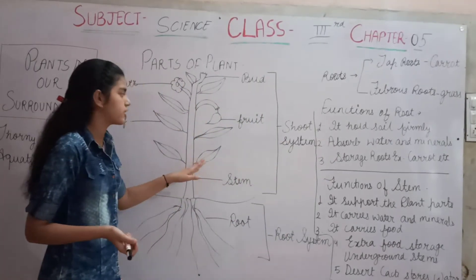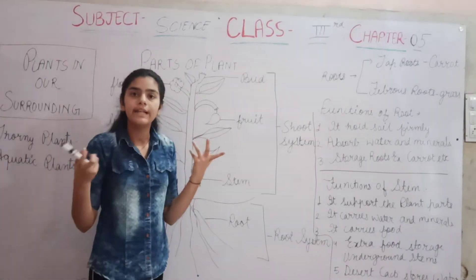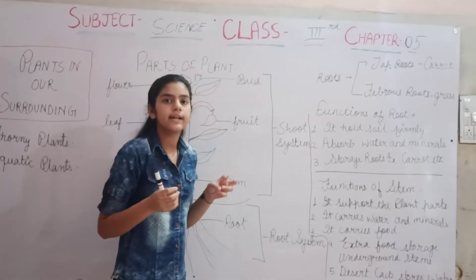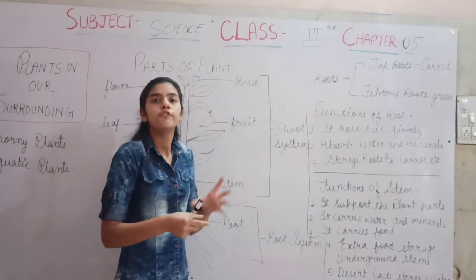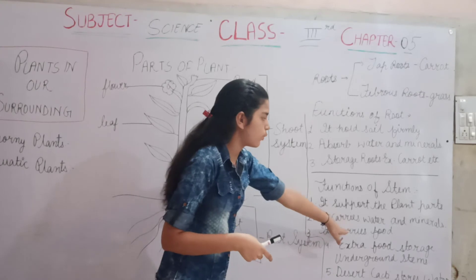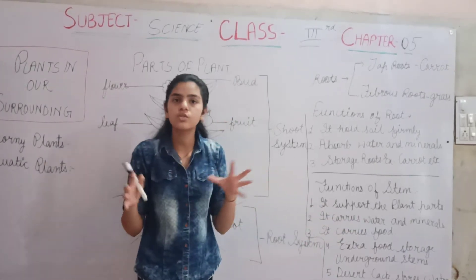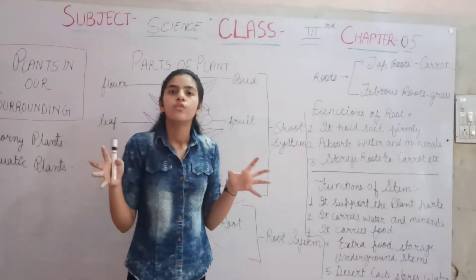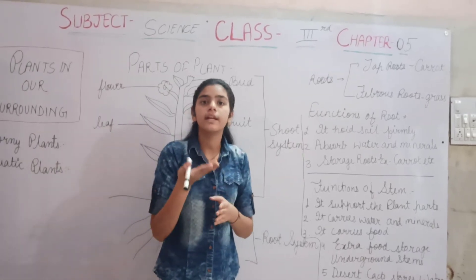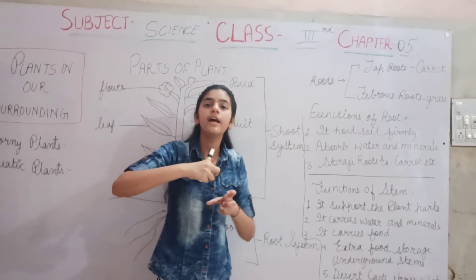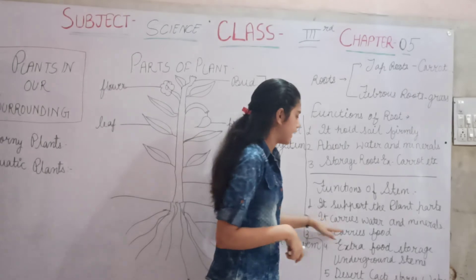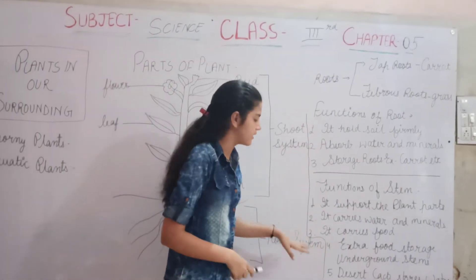The stem supports plant parts like branches, fruits, leaves, and flowers — it keeps them from falling. Second, it carries water and minerals. The roots absorb water and minerals and transfer them upward. The stem then absorbs and distributes them to all parts of the plant.